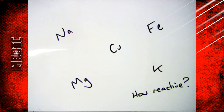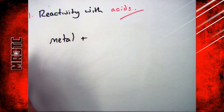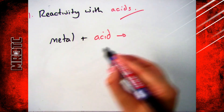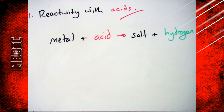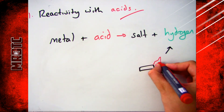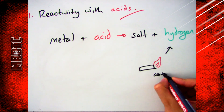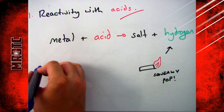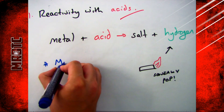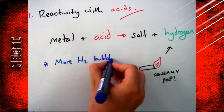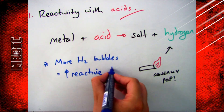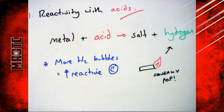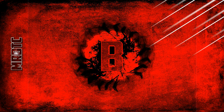Starting with reactivity with acids: whenever you put a metal into an acid you get salt and hydrogen. You can prove this by using the squeaky pop test — if you put a lit splint in you get a squeaky pop, which proves you've got hydrogen present. The more bubbles you get, the more reactive the metal is, and you'll also get a louder squeaky pop.